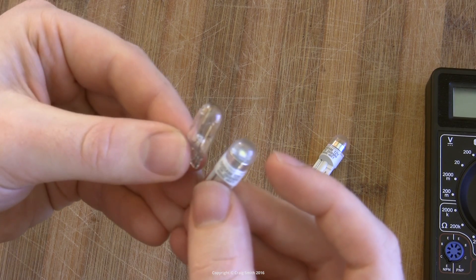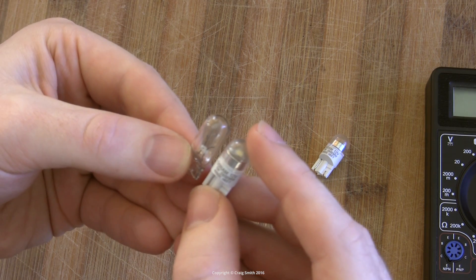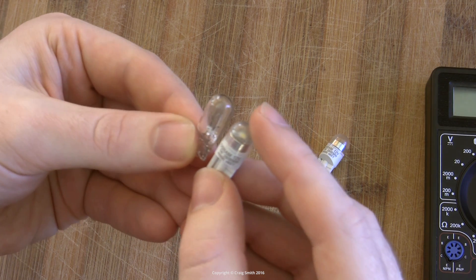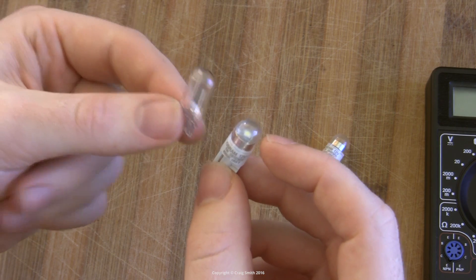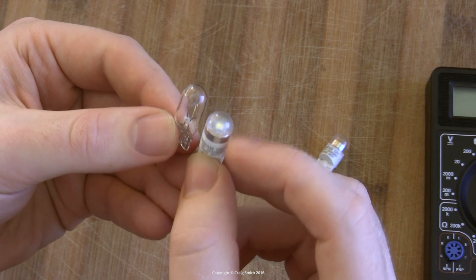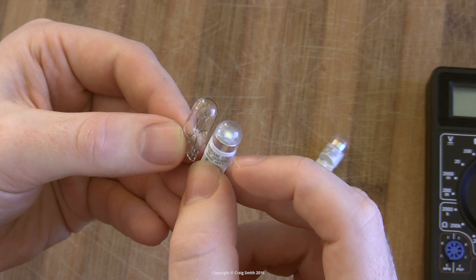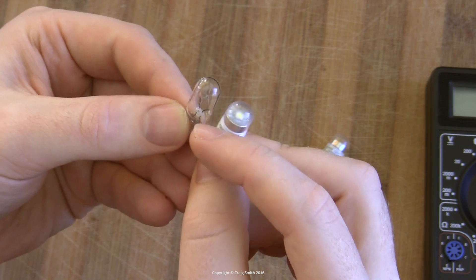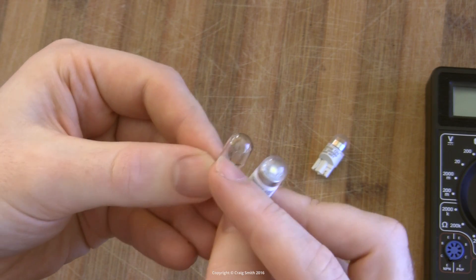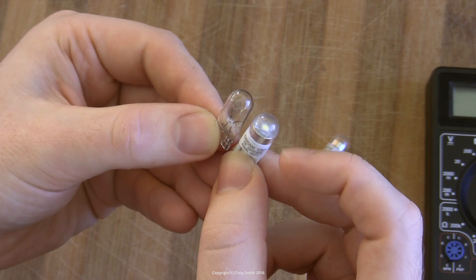Now, the first thing you might notice is that the size and shape of the Osram is very, very close, if not identical to the original filament style. So anywhere that this will fit, this should fit too. And if we look at the position of the LED chip, you can see the yellow thing inside the lens there. It's very close to the position of the filament of this style. I know it's hard to see the filament on the video, but it's only a few millimeters different. So that's good.